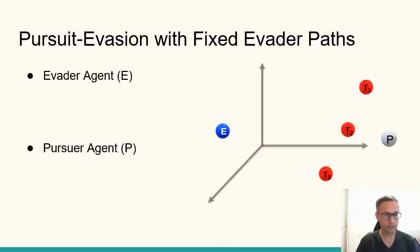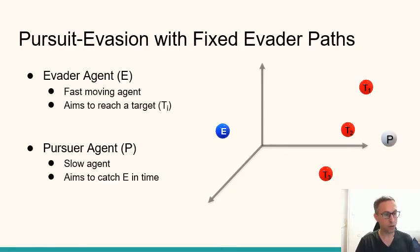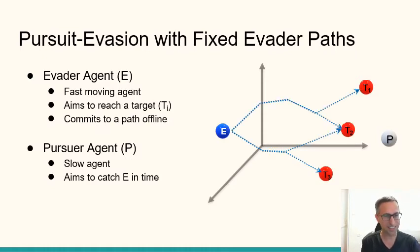But the specific type of pursuit evasion problem we deal with has another set of special properties. First, the evader doesn't just want to evade, it wants to reach one of these targets. Also, the evader is faster than the pursuer. And the pursuer, while being slower, has one advantage. The advantage is that the evader must commit beforehand to a path before it starts to move. And once it starts to move, it cannot react and change anything.